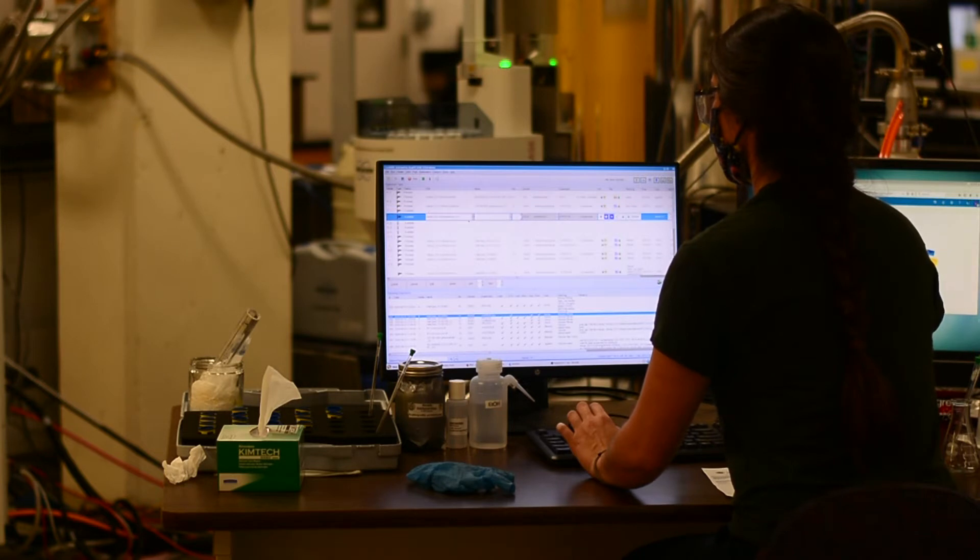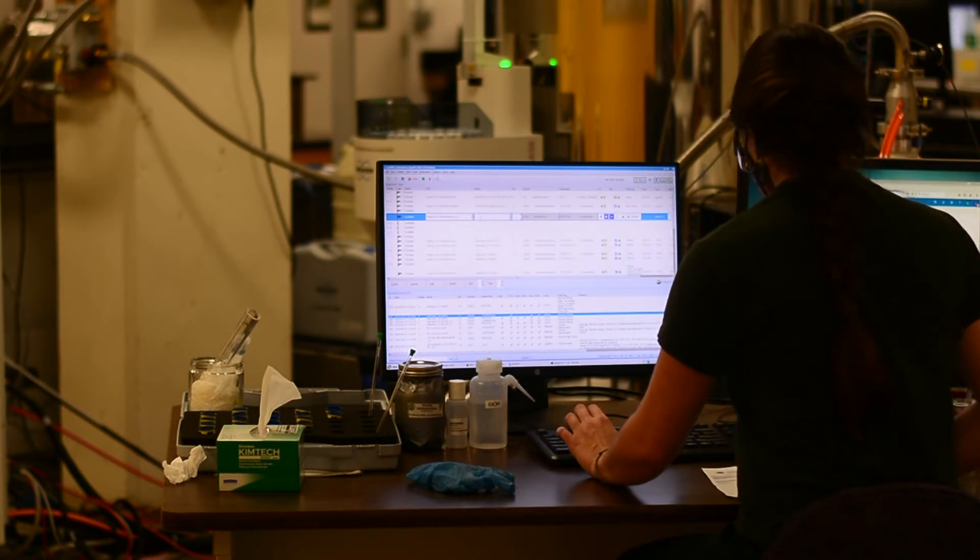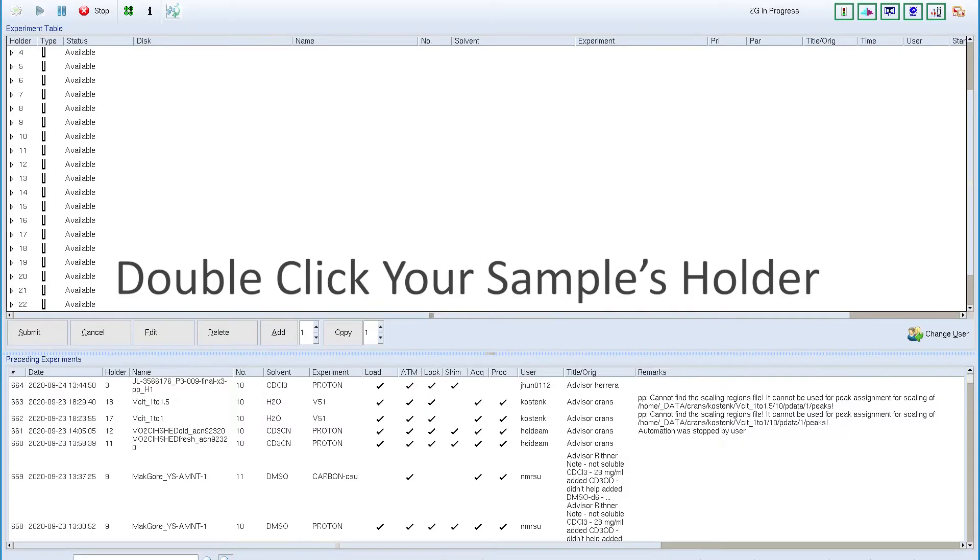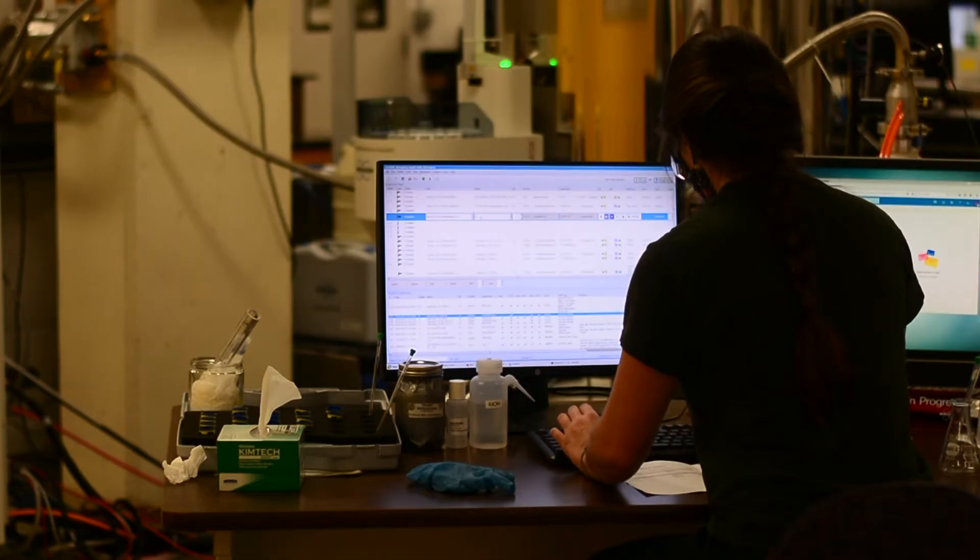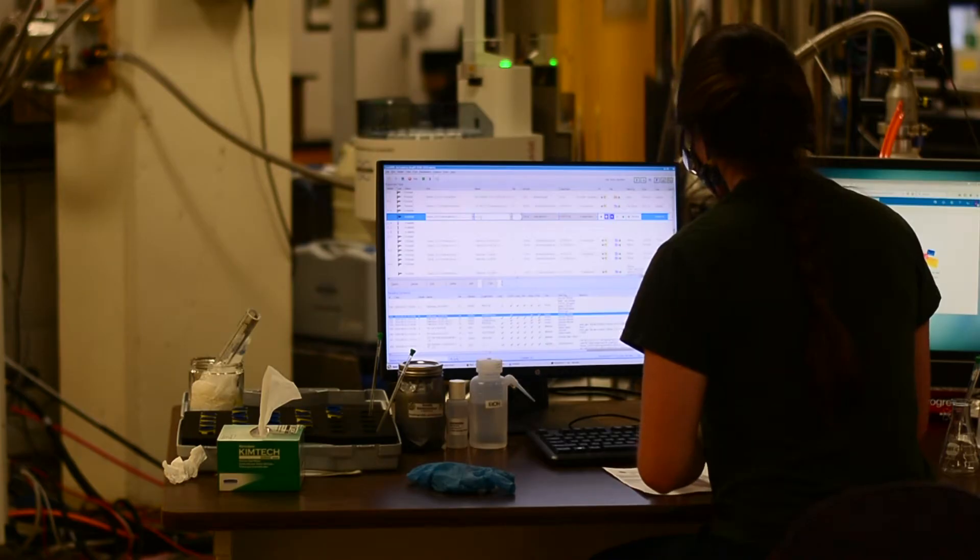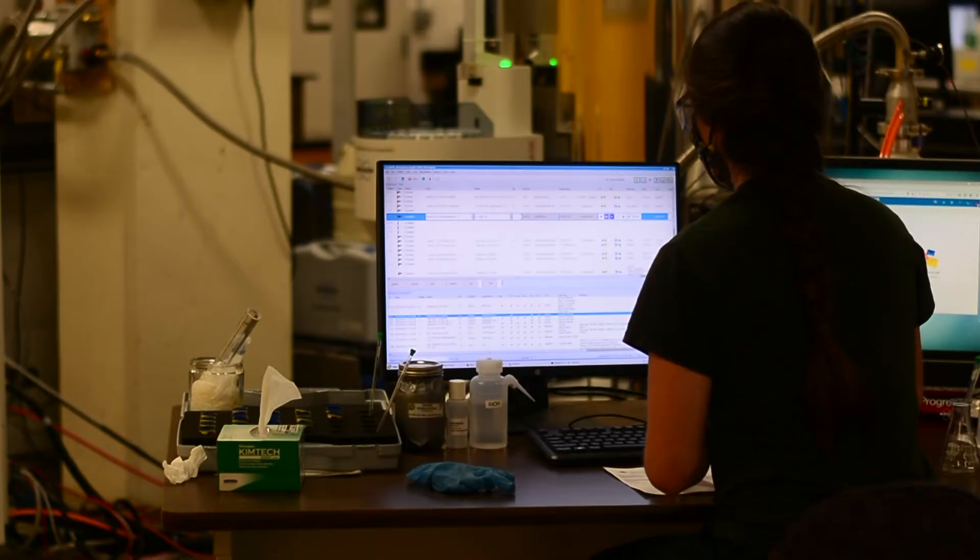Select the position in the software that corresponds with the position that you loaded your sample in on the auto sampler, and add a new experiment by clicking the add button on the software.